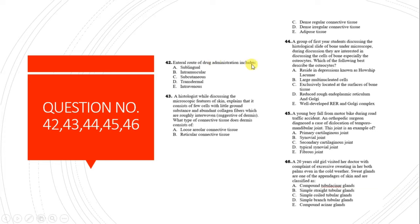Question 42: The enteral route of drug administration includes sublingual, intramuscular, subcutaneous, transdermal, and intravenous. Enteral refers to drugs passing through the mouth. Sublingual, where the drug is placed under the tongue, is the correct answer, while the others belong to the parenteral group.